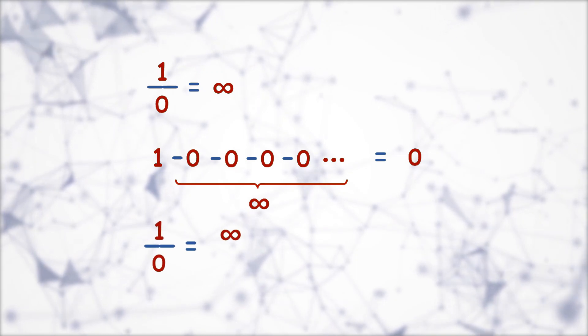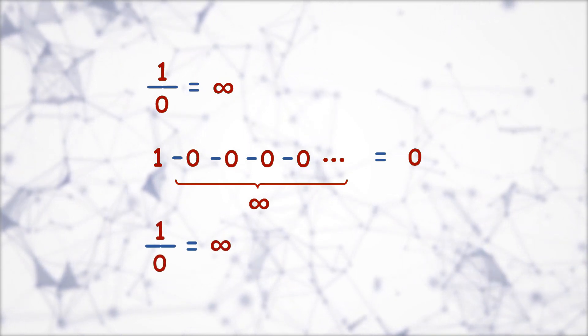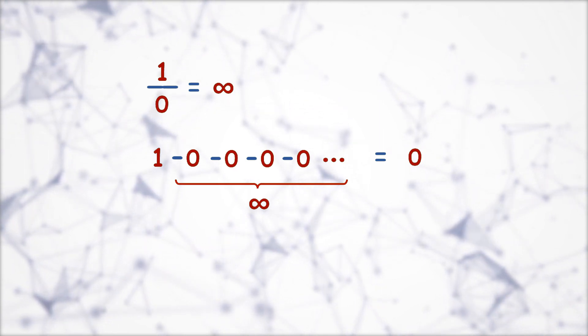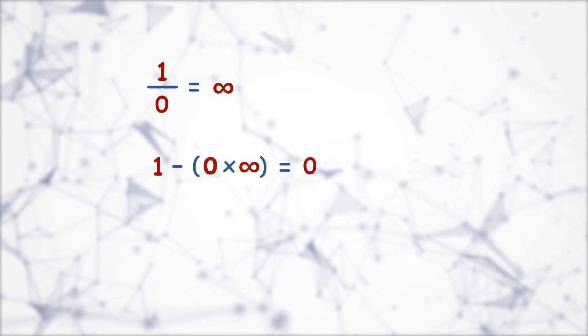But what if we don't know 1 by 0 is infinity, it's not proven yet. So let us prove this statement is true. So in this equation 0 is repeated infinite times which can be written as 0 times infinity.